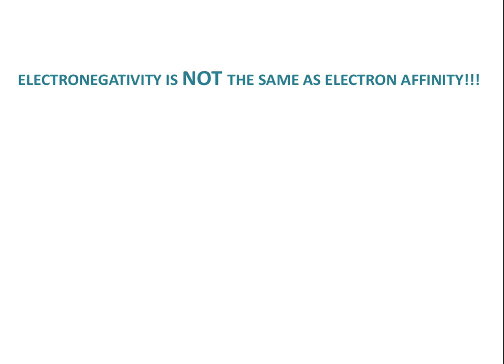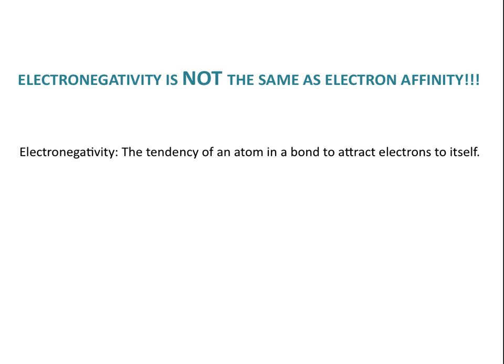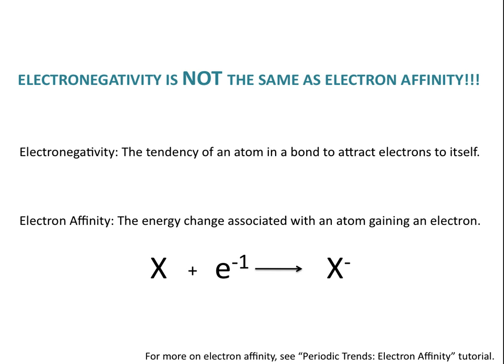Something that's really important to remember is that electronegativity is not the same as electron affinity. Electronegativity has to do with atoms in a bond — it's the tendency of an atom in a bond to attract the electrons in that bond to itself. Electron affinity is the energy change associated with an atom gaining an electron. Although electronegativity and electron affinity have the same general periodic trend, remember that these are two different things.